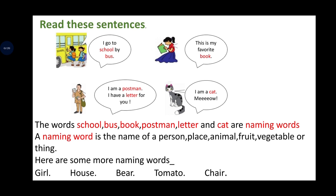Here are some more naming words: for example, girl, house, bear, tomato. Now, how do we know what a naming word is? We have the definition: a naming word is the name of a person or people around us, places in our area, animals, birds, fruits and vegetables, and small or big things. That means everything around us has a name, and we call it a naming word.